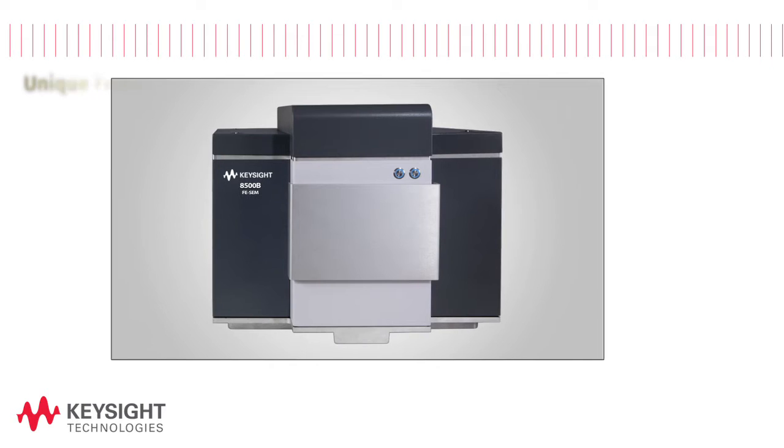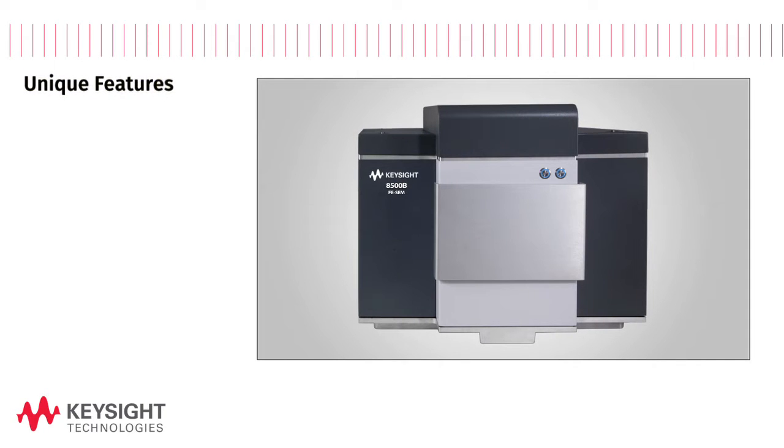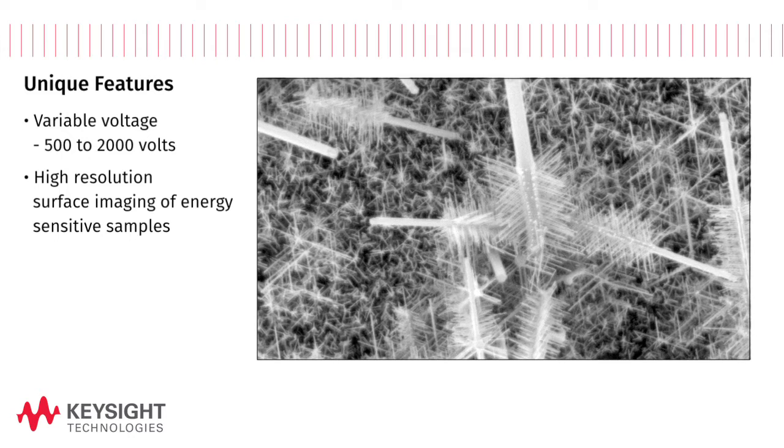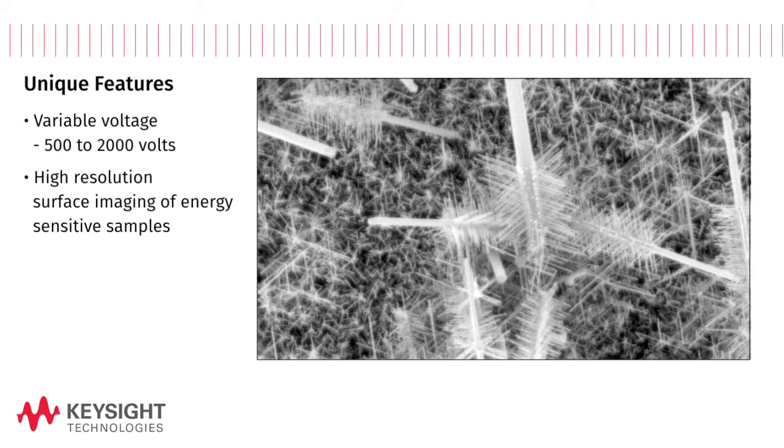The 8500B offers several unique features. Continuously variable voltage from 500 to 2000 volts allows high-resolution surface imaging of energy sensitive samples or samples that tend to charge in the electron beam.